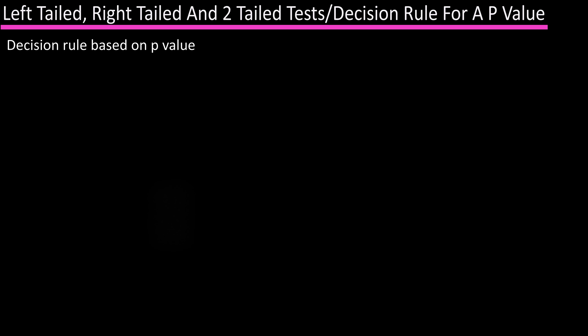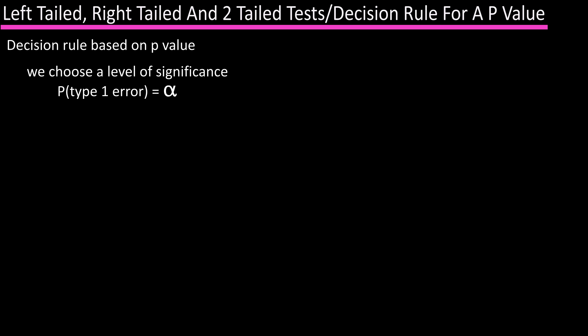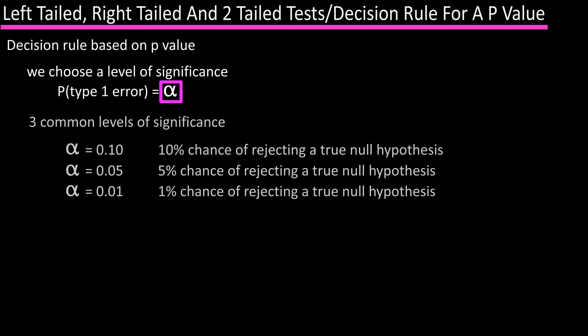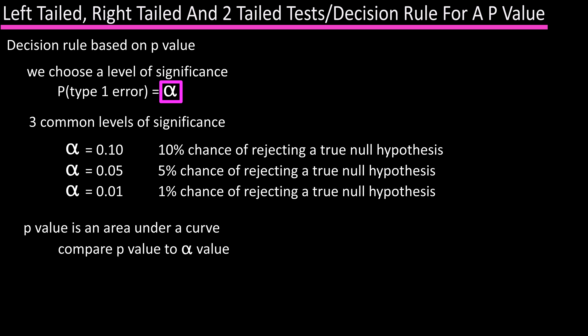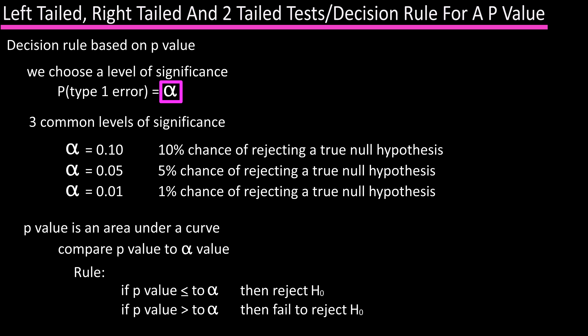Now for the decision rule based on the p-value. In hypothesis tests, we choose a level of significance, which is the probability of making a Type 1 error — that is, rejecting the null hypothesis when it's actually true. The level of significance is noted as alpha, and three commonly used levels are alpha equals 0.10, alpha equals 0.05, and alpha equals 0.01. The rule is: if the p-value is less than or equal to alpha, then reject H sub 0. If the p-value is greater than alpha, then fail to reject the null hypothesis.